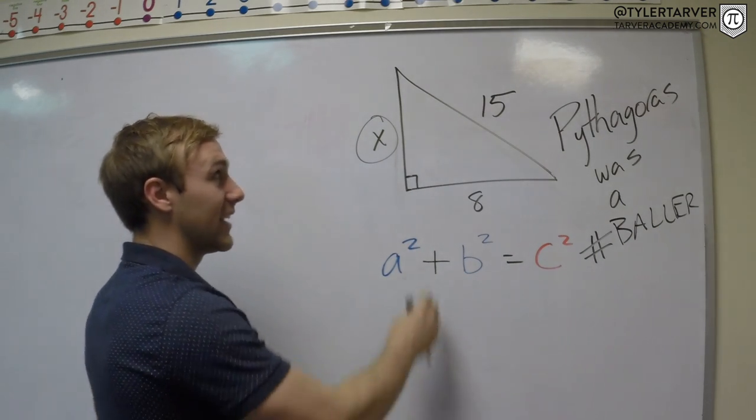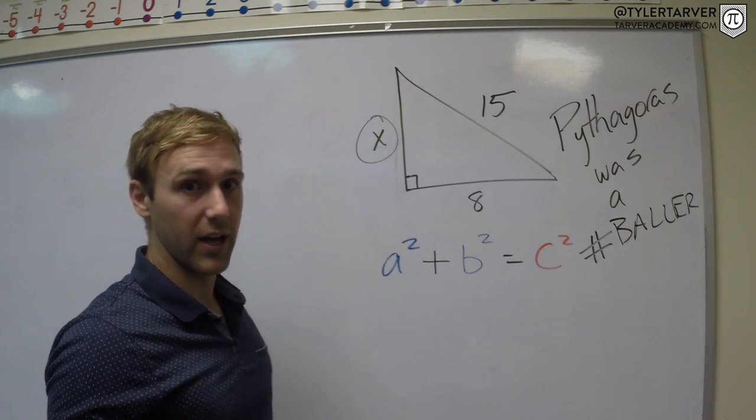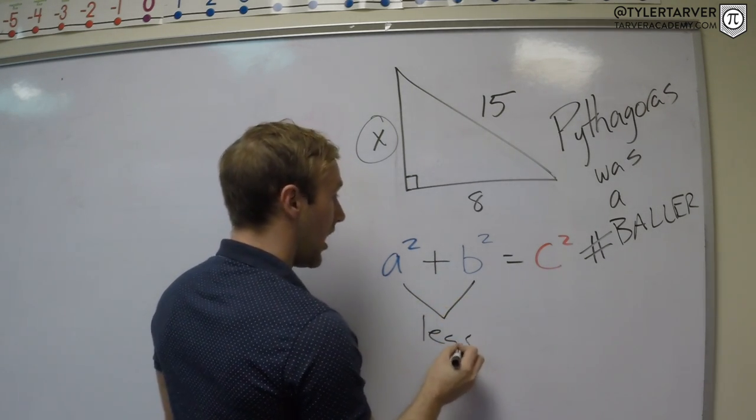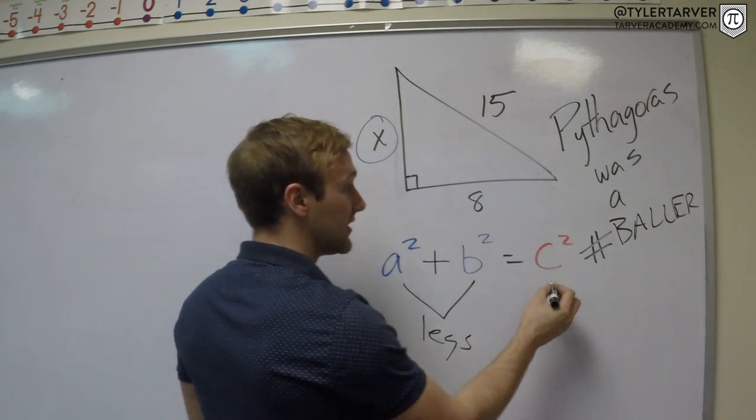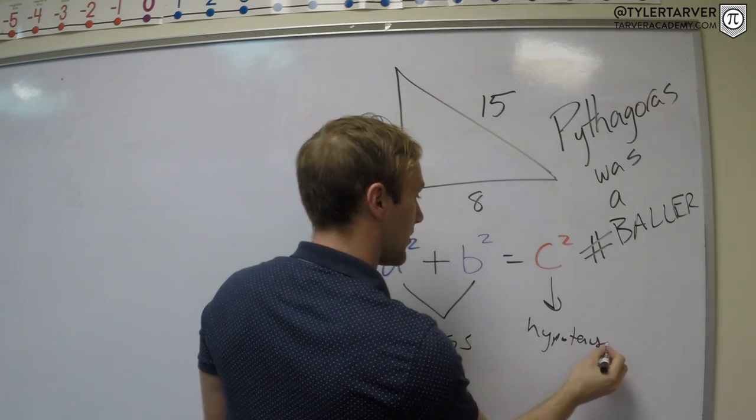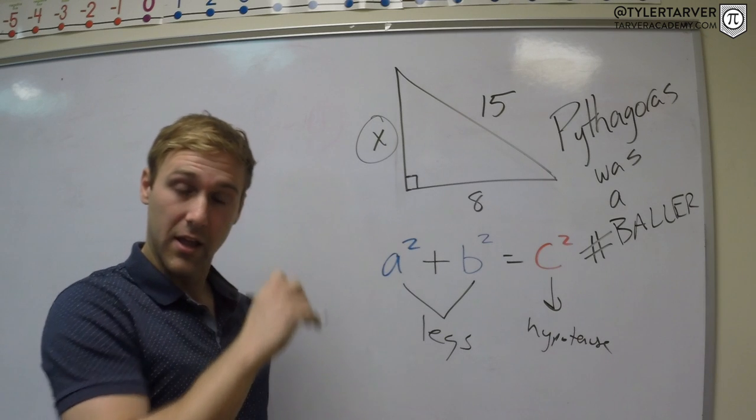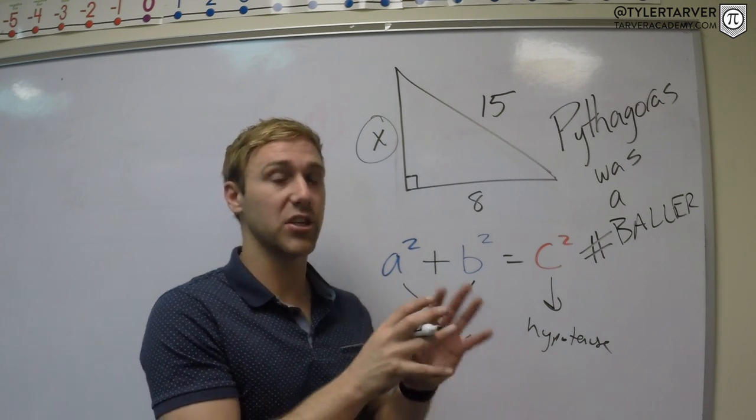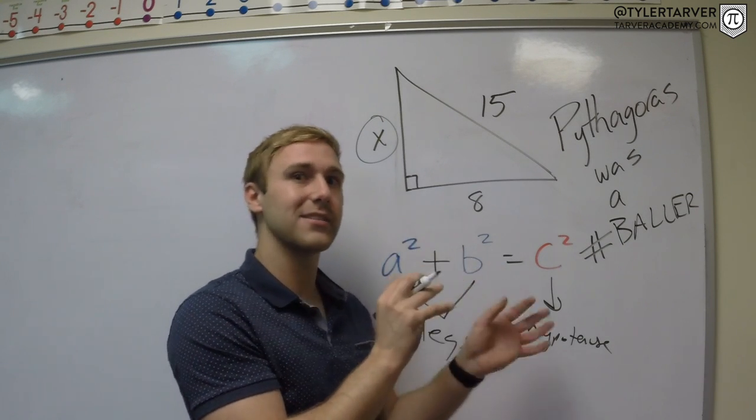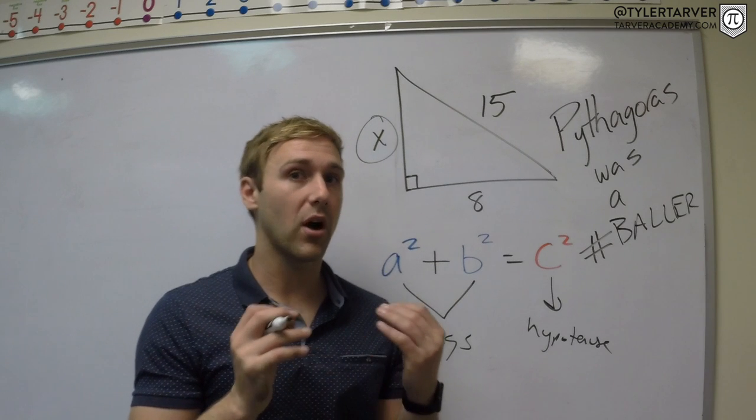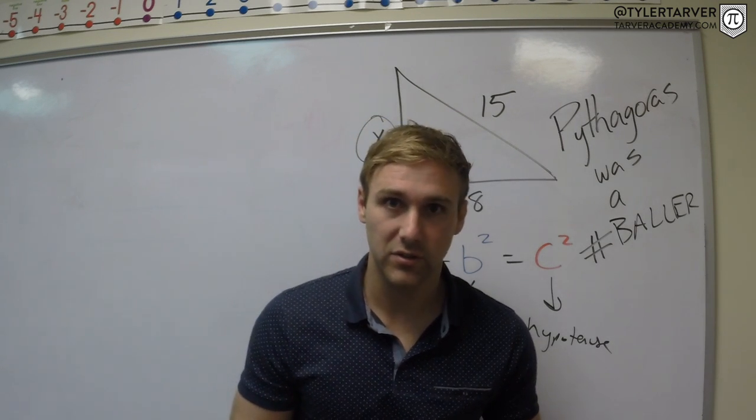A and B are legs of the triangle, C is the hypotenuse. The thing with the hypotenuse is the legs, it does not matter. Those two can be switched, it doesn't matter which one is A as long as one of the legs, it's fine. Now the hypotenuse, that is the special one, that is the one you need to get correct.